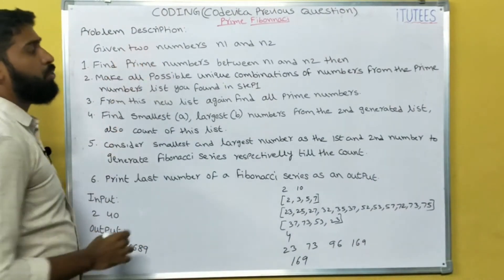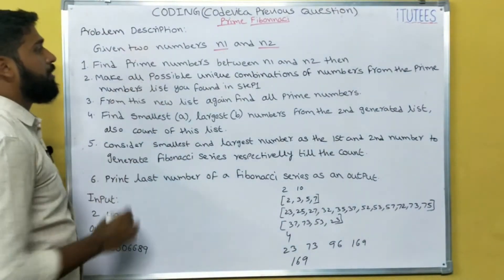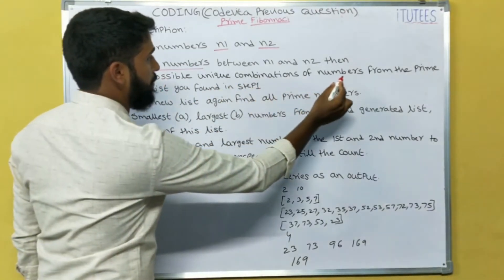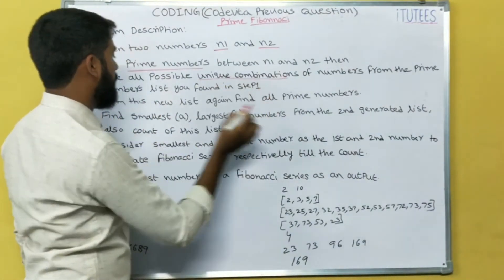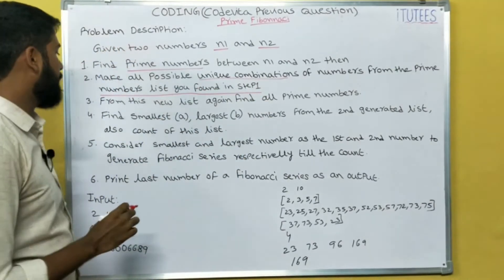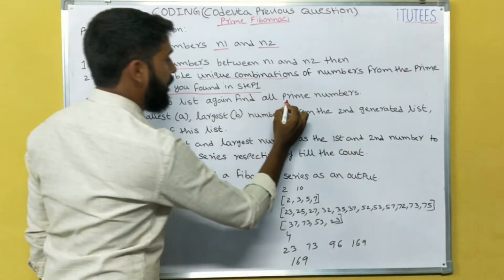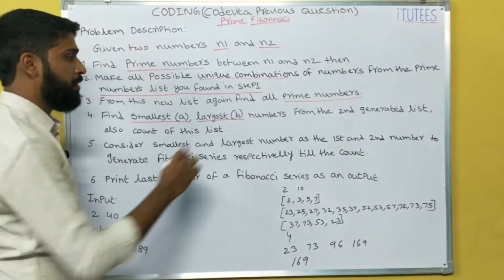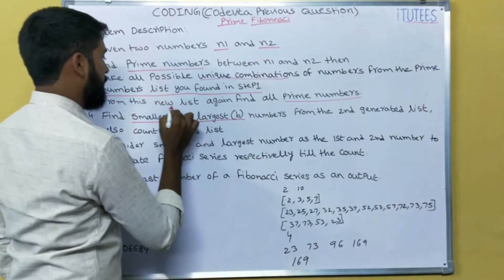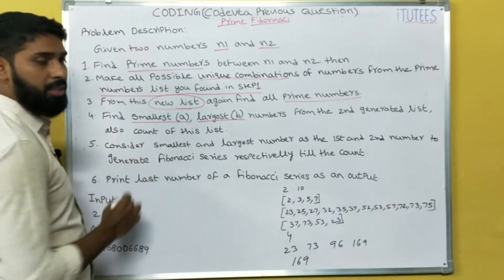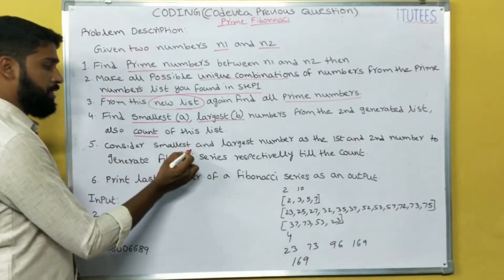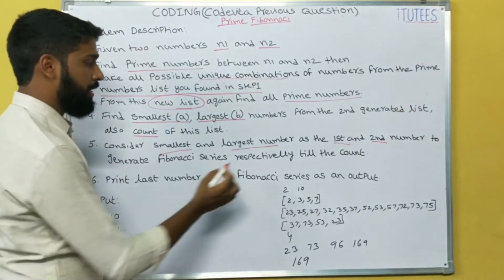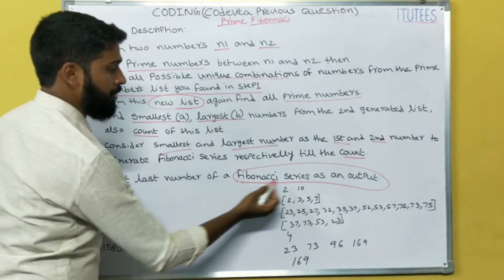So the problem description: given two numbers n1 and n2, find the prime numbers between n1 and n2 — this is the first task. Next, make all possible unique combinations of numbers from that prime numbers list. Third step, from this new list again find all prime numbers. Fourth step, find the smallest number, largest number, and count of this list. Consider the smallest and largest numbers as the first and second numbers to generate a Fibonacci series respectively, till the count, and print the last number of the Fibonacci series as output.